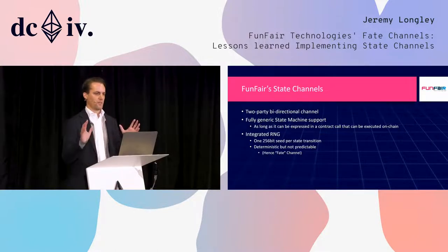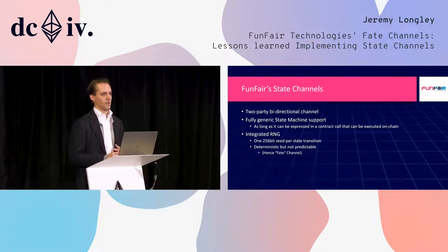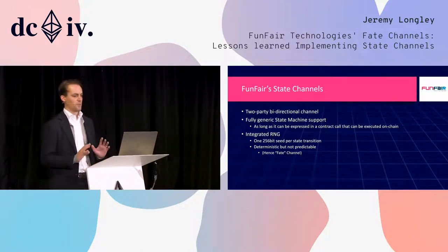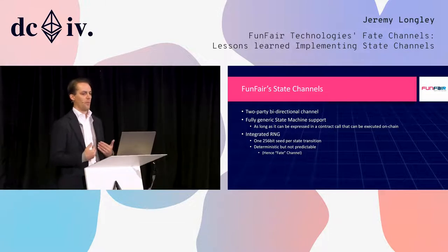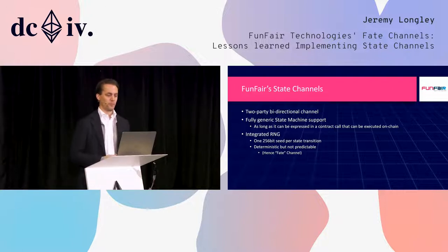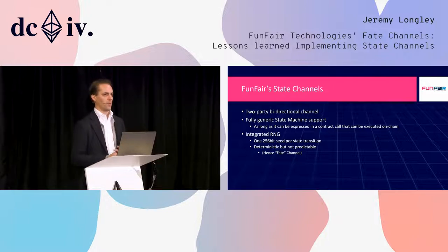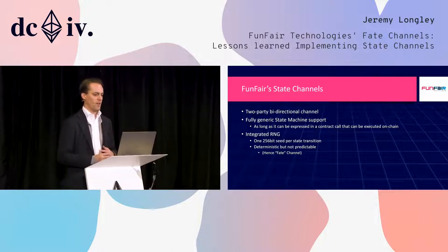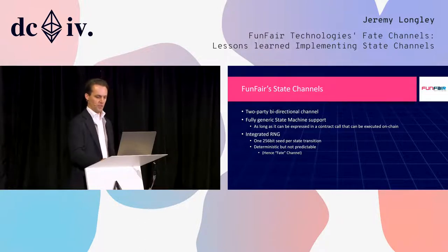We have a fairly specific form of state channels developed for our application rather than something massively generalised. We have a two-party bidirectional channel and we support a fully generic state machine — state machines that can do pretty much anything, as long as it can be expressed in a contract call executable on chain. We also provide an integrated RNG, which is a form of a complex commit-reveal scheme using hashes. It's deterministic but not predictable, and we feed one random number into every state transition available for the state machine.